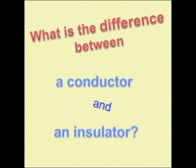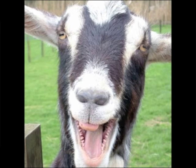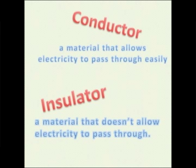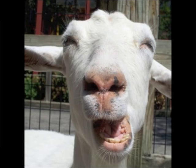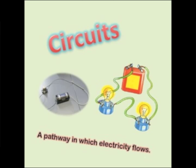Number four: what is the difference between a conductor and an insulator? A conductor is a material that allows electricity to pass through easily. An insulator is a material that doesn't allow electricity to pass through. Think of insulator as the thing that keeps energy in, like insulation in your house to keep the heat in during winter. Number five: define a circuit. A circuit is a pathway in which electricity flows.